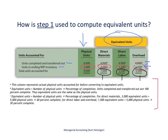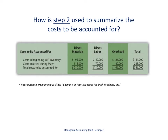We're going to need those equivalent units later, so if you're not sure what that means, come back to this slide. Next, we're looking at step two: summarizing the costs to be accounted for. All of this information was provided back a couple of slides. We're looking at all the costs that were in beginning work in process inventory for direct materials, direct labor, and overhead, and doing the same with costs incurred in May — breaking them out into direct materials, direct labor, and overhead to get our total costs for each area.